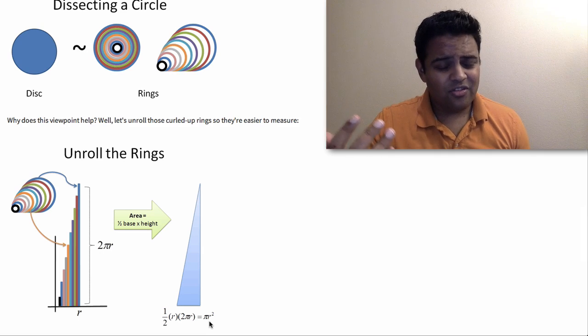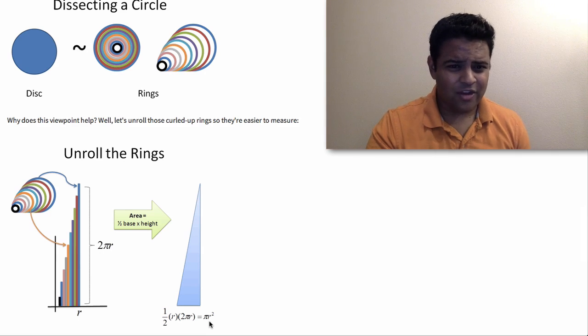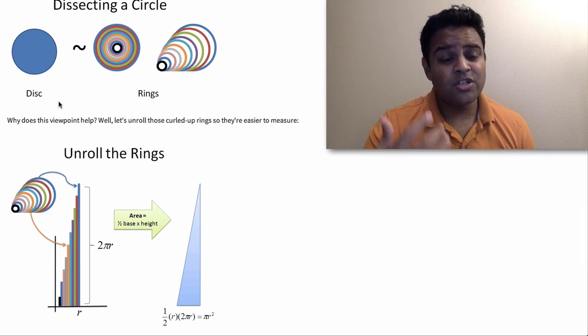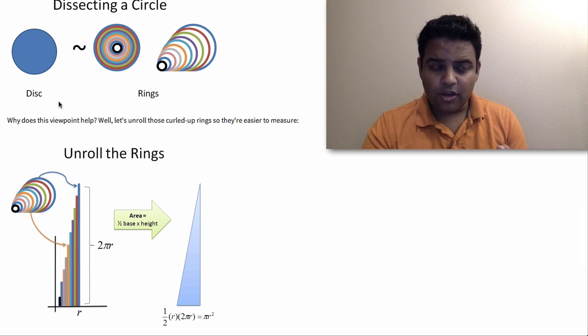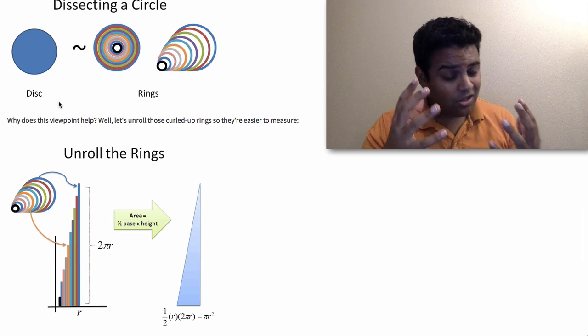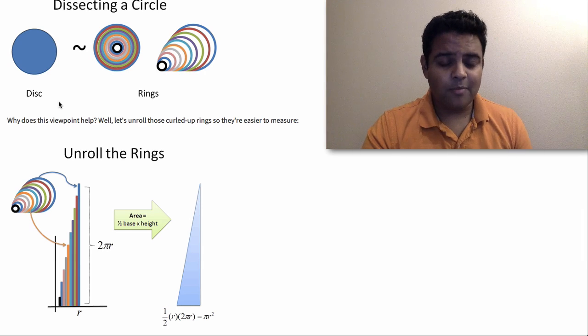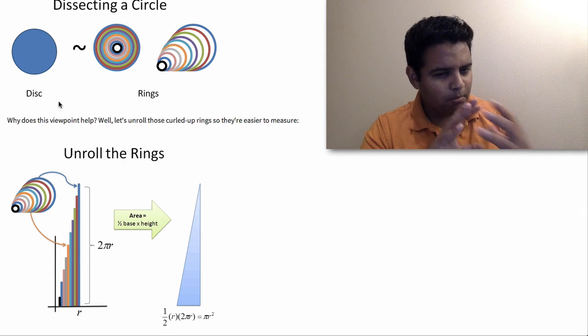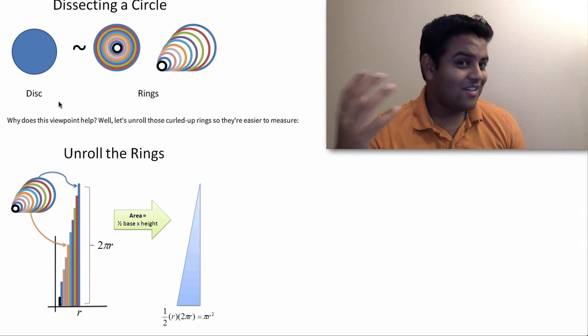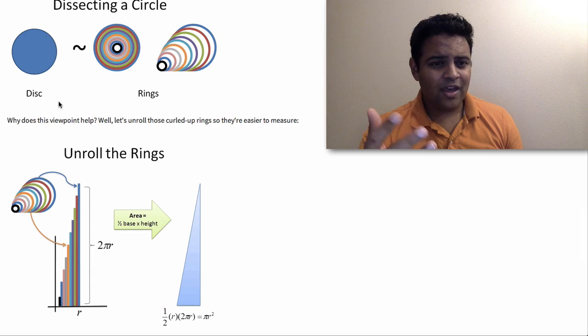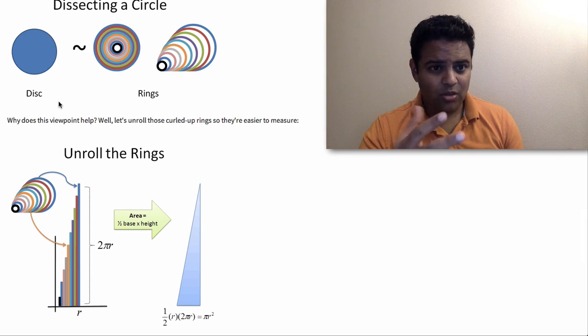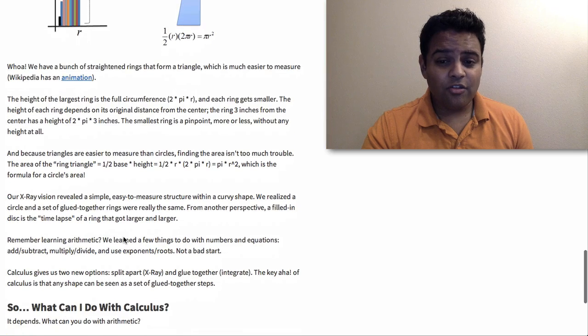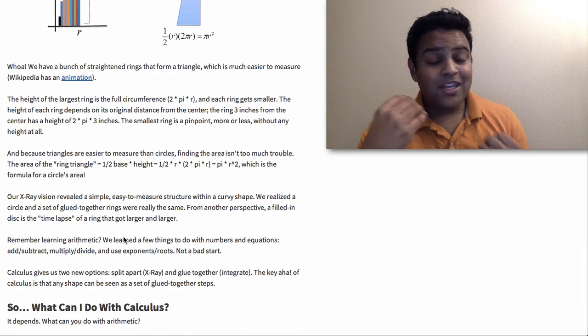And so we measure this triangle and it turns out that it's πR squared. So whoa, this is pretty cool, right? We took this kind of, I mean, I don't want to say immeasurable shape, but this really difficult to measure shape and split it using our x-ray vision into a much easier to measure shape and just measured that. And so that's just like a taste of the power of calculus where we can look at a shape and analyze it a little bit differently. And with that superpower, we know a new fact. I mean, we looked at it and we turned this kind of blob into something measurable.